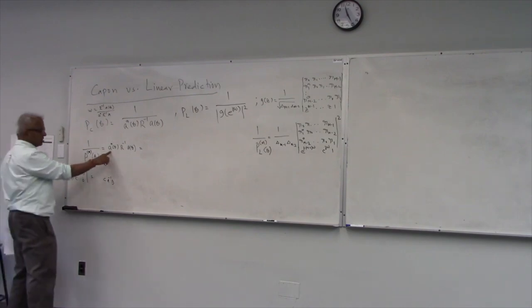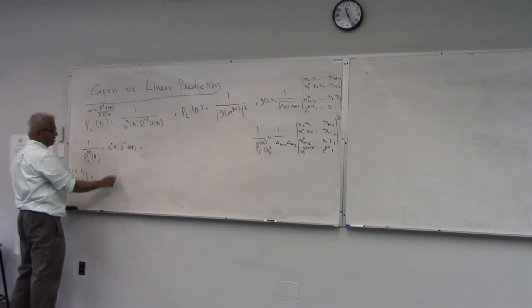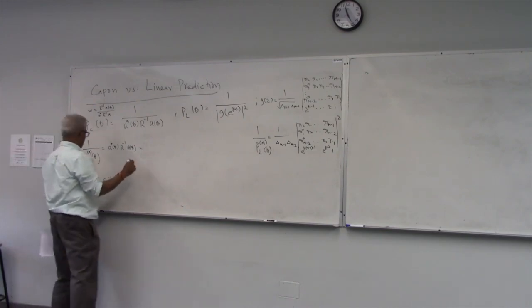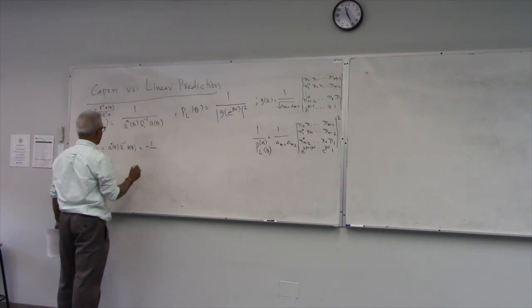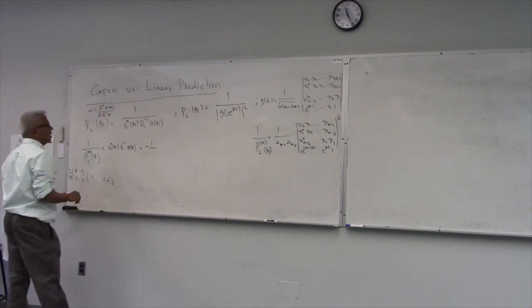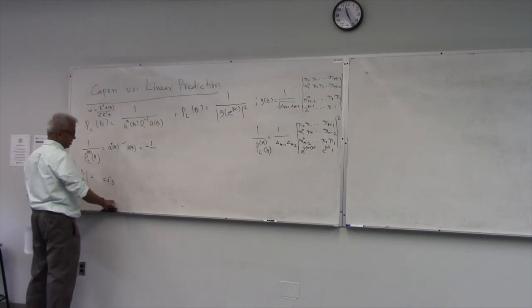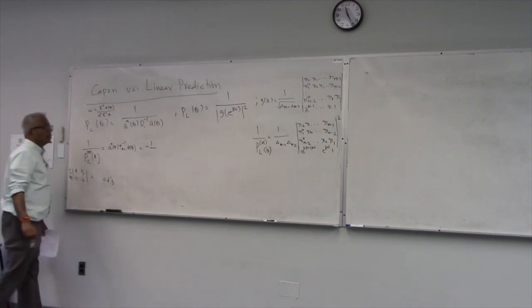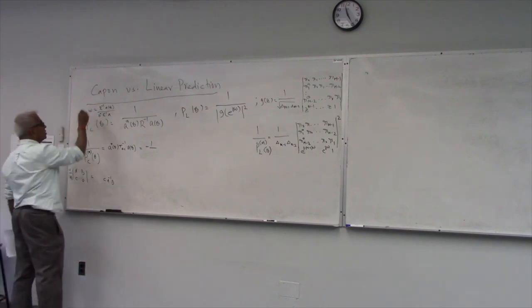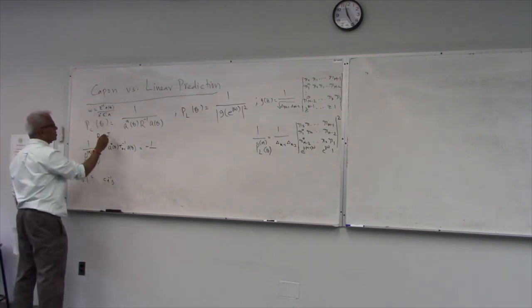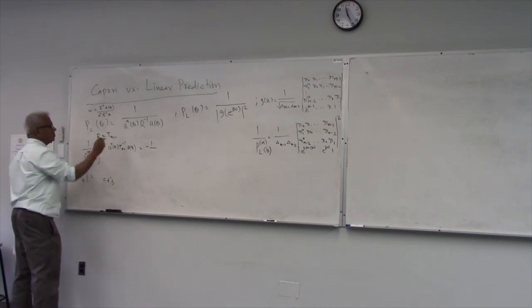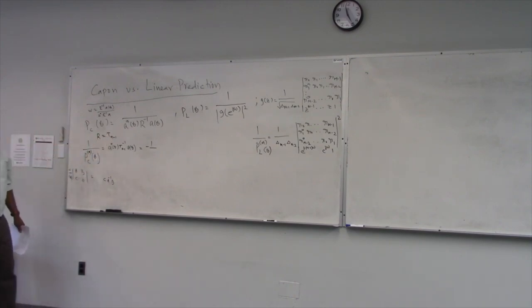So you have, this is your C, this is your A, this is your B. So this is going to be minus 1 over. And remember, we are dealing with what? So here your R is actually Tm minus 1, right?